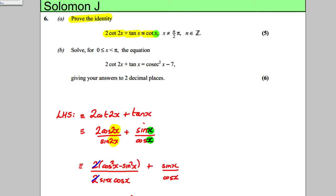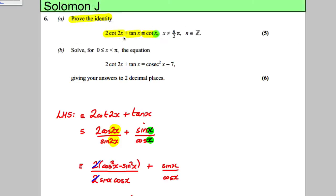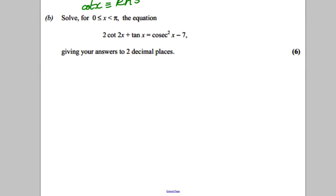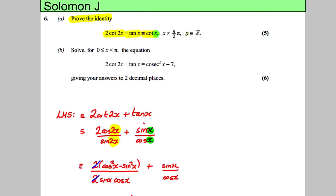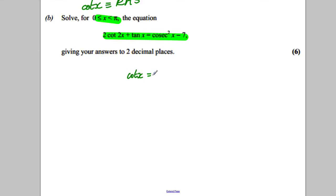We are now asked to solve the following for Part B. Usually in Part B it uses Part A, so keep that in mind. We're asked to solve for x between 0 and π the equation 2cot(2x) + tan(x) = cosec²(x) − 7, giving your answer to two decimal places. Since Part A showed 2cot(2x) + tan(x) = cot(x), I'm going to solve cot(x) = cosec²(x) − 7 instead.